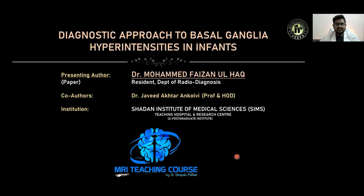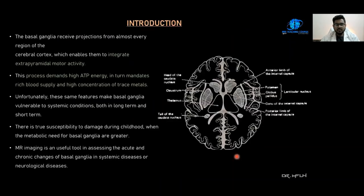The topic of this presentation is the diagnostic approach to basal ganglia hyperintensities in infants. The basal ganglia receive projections from almost every region of the cerebral cortex, enabling them to integrate extrapyramidal motor activity. This process demands high ATP energy, which in turn mandates rich blood supply and high concentration of trace metals. Unfortunately, these same features make the basal ganglia vulnerable to systemic conditions in both the long term and short term, with true susceptibility to damage during childhood when the metabolic need is much higher.